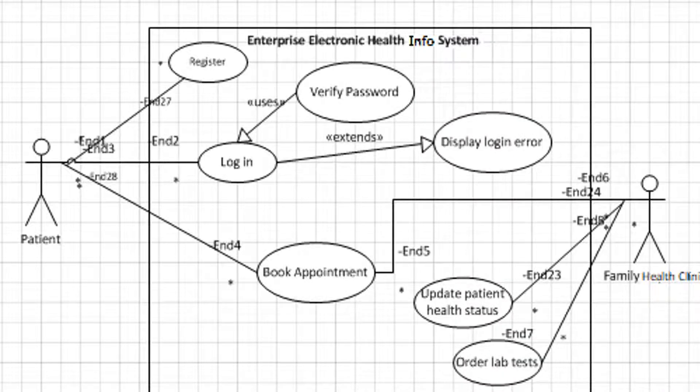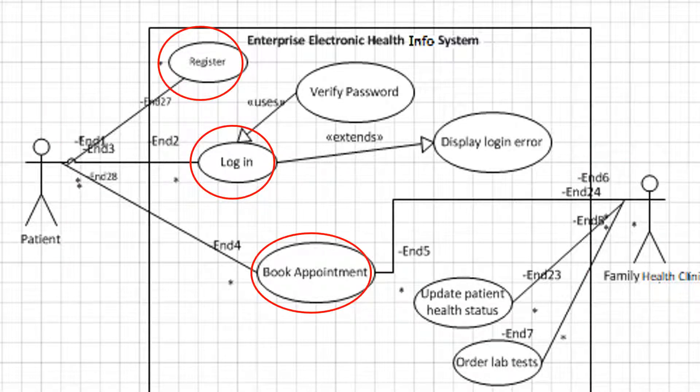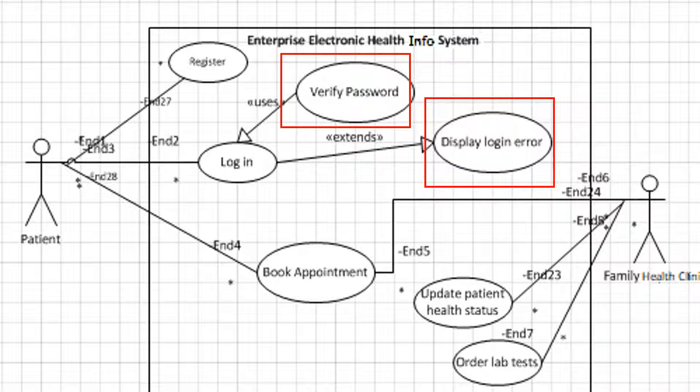Here I focused onto the top portion of the Enterprise Electronic Health Information System. We can see the users and their corresponding use cases. Let's focus on the patient first. The patient has three base use cases: register, login, and book appointment. These are considered base use cases because they are the first actions the patient performs on the system. The patient also has use cases attached to their login trigger, including verify password and display login error, with different arrows connecting to the login use case.